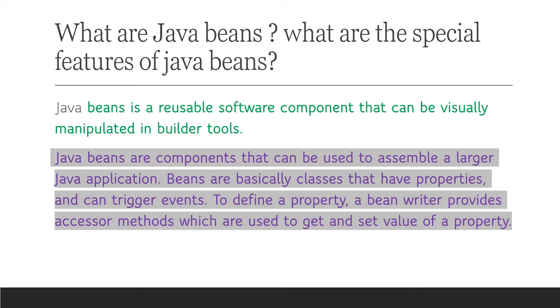To define a property, a bean writer provides accessor methods, which are used to get and set the value of a variable.